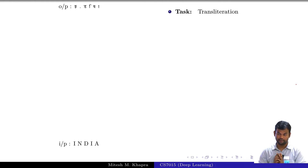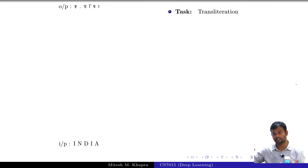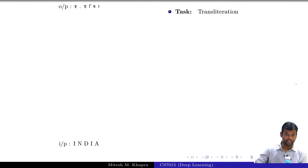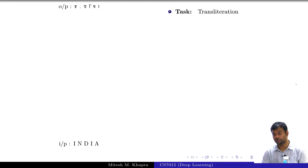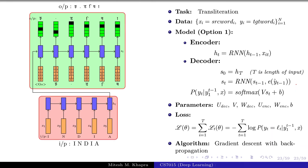Transliteration: writing the same word in another language script — typically done for named entities. For example, 'Thomas' is just written in Devanagari script rather than being translated. The input is a word — a sequence of characters. The output is also a sequence of characters. The encoder is an RNN, the decoder is an RNN. You can copy the equations from the previous slide — everything remains the same. This shows why the encoder-decoder framework has become so powerful.